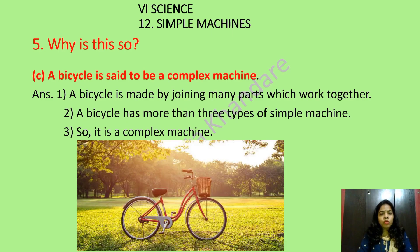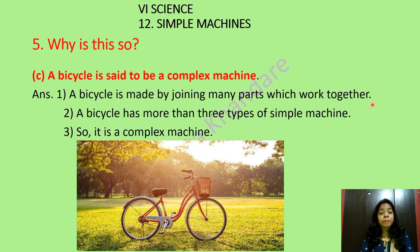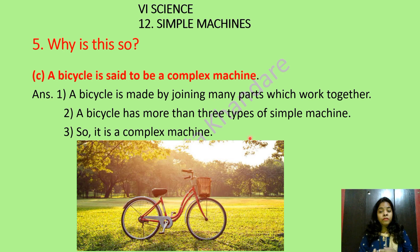Why is a bicycle said to be a complex machine? A bicycle is made by joining many parts which work together. There is a pedal, a wheel, brakes — so many things are there. A bicycle has more than three types of simple machine. So it is a complex machine — it is not a simple machine.